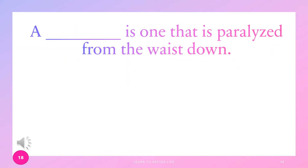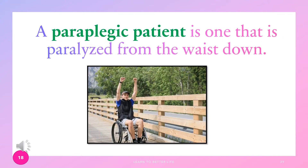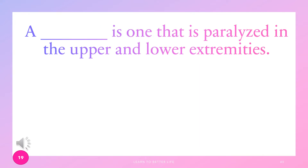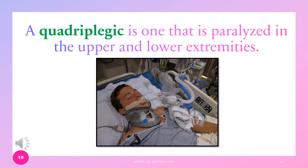A blank is one that is paralyzed from the waist down — that is a paraplegic patient. What about when a patient is paralyzed in the upper and lower extremities? That is a quadriplegic patient.